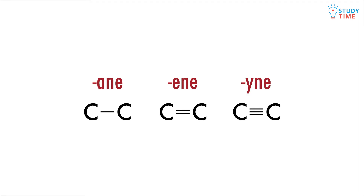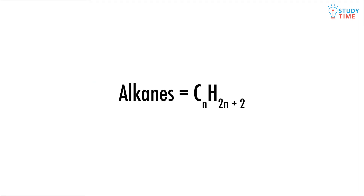And '-yne' when there are three bonds connecting two carbons. If we think of 'n' as the number of carbons, we can find a general molecular formula for all simple alkanes. Alkanes = CₙH₂ₙ₊₂. This makes sense — each carbon has four bonds on it.